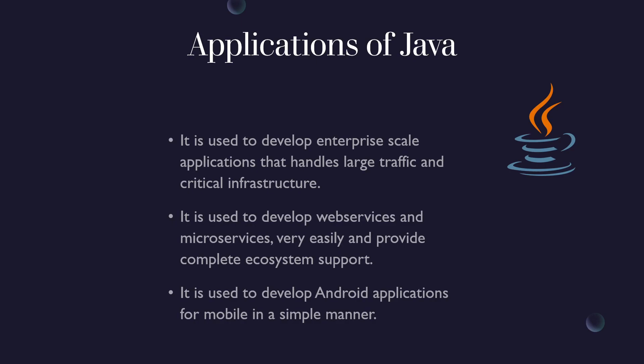Third, Java can be used to develop mobile applications and Android applications in a very simple manner. Once you learn Java, you can then learn Android development, which will be very useful. You can also easily learn Kotlin, which is currently the de facto programming language for developing Android applications. Kotlin completely supports and is fully compatible with Java, so you can integrate Java into Kotlin.